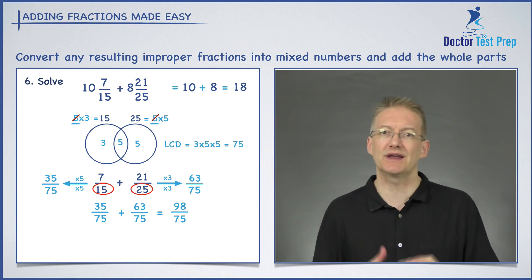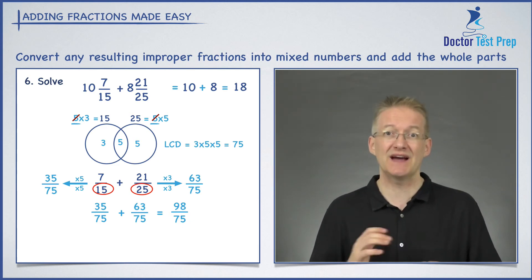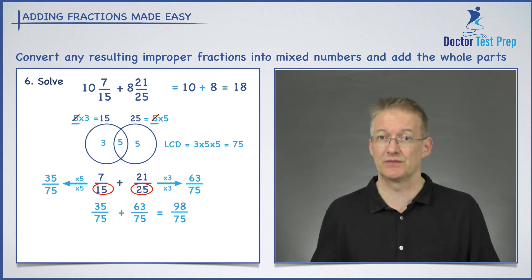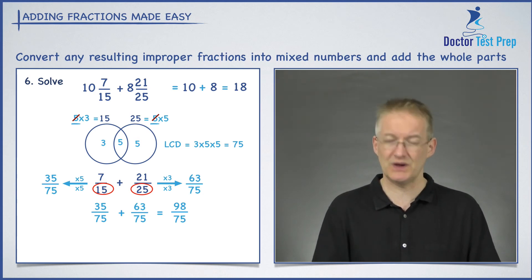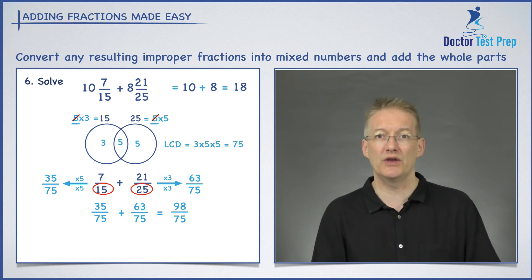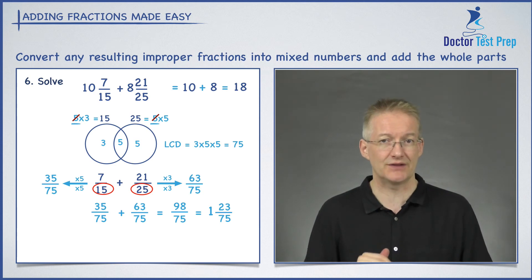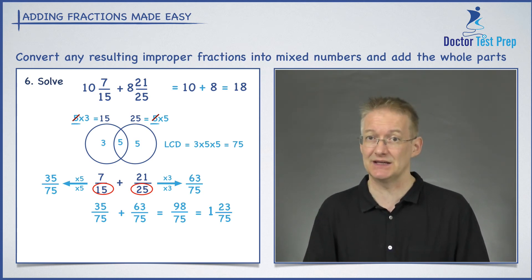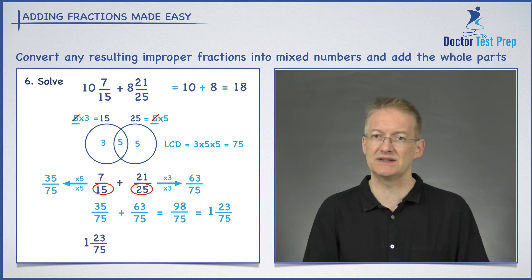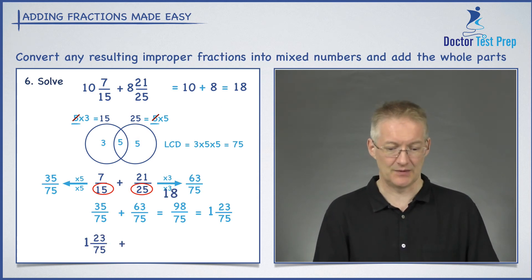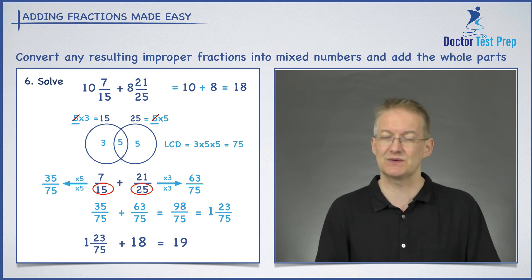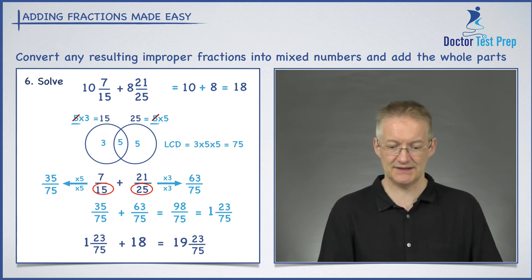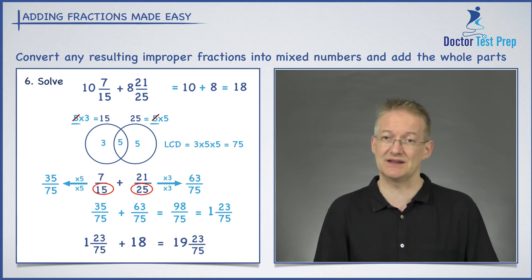Notice we've got an improper fraction, so we convert 98 over 75 into a mixed number. 75 into 98 goes once, with 23 left over — so 1 and 23 seventy-fifths. Remember, at the beginning of the question we added the whole numbers and got 18. So we add the 1 and 23 seventy-fifths to the 18: we just add the whole numbers to get 19, and we've got that 23 seventy-fifths left over. Our answer is 19 and 23 over 75.